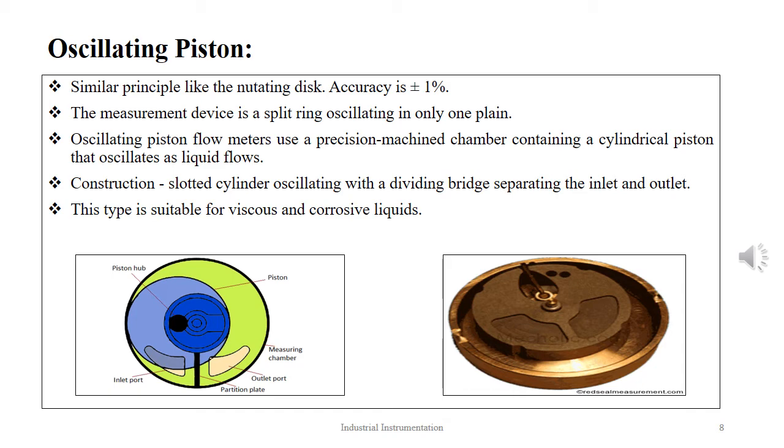Since the compartment volume is known, accurate measurement is obtained by knowing the revolutions. It is similar to that of a nutating disc except that the measurement device is a split ring oscillating in only one plane. It comprises a slotted cylinder oscillating about a dividing bridge which separates the inlet and outlet ports.